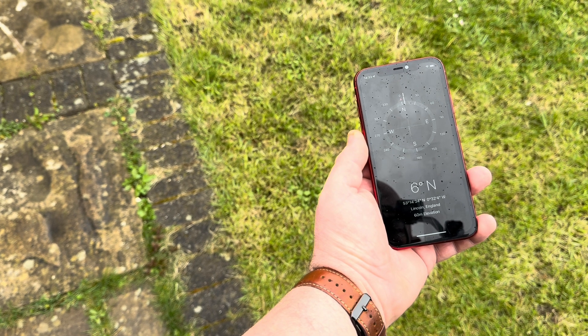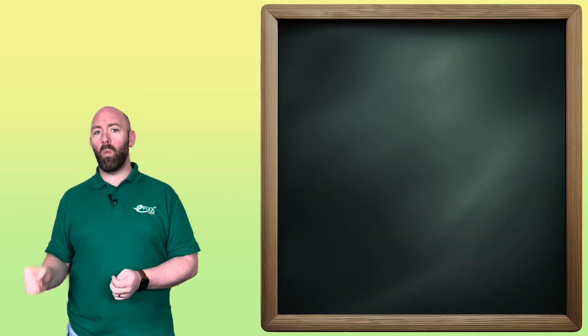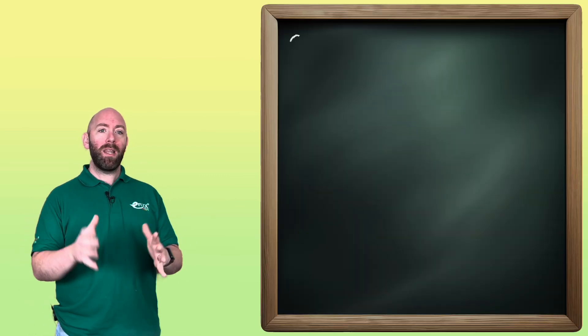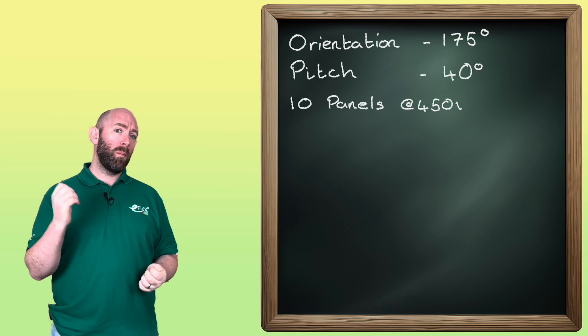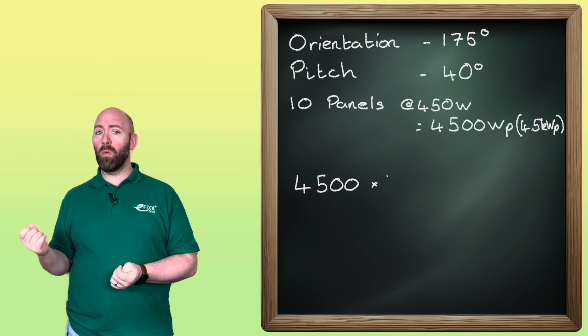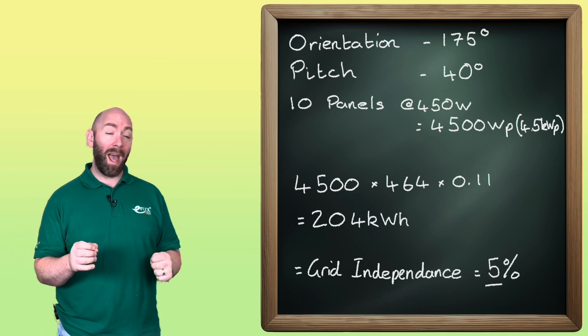Finally, let's consider a worst-case scenario: an orientation of 175 degrees from south, a pitch of 40 degrees, and a shading percentile of 0.11 from the shade survey. Our 10-panel array gives us 4,500 multiplied by 464 multiplied by 0.11, which comes out at 204 kilowatt hours per annum self-consumption and a grid independence of just 5%. In this scenario it may not be worth it, but we'll look at this example later in our videos to see if anything else can improve it.